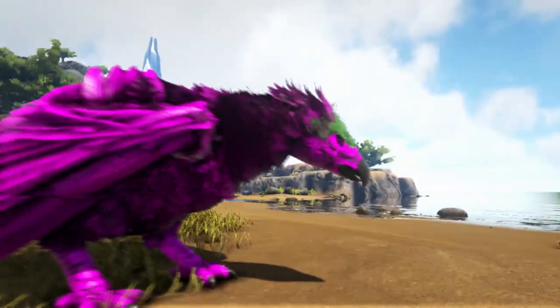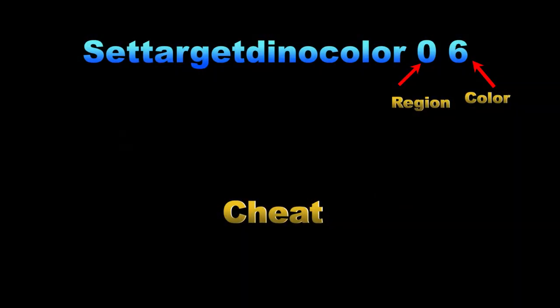Alright, so once again here is the admin command we used in this video: 'settargetdinocolor' — all one word — leave a space, put in the number of the region you want, zero through five, leave a space, and then type in the number of the color you want, one through 56. Remember, when not on single player, type in 'cheat' and leave a space before these commands or they won't work on your server.